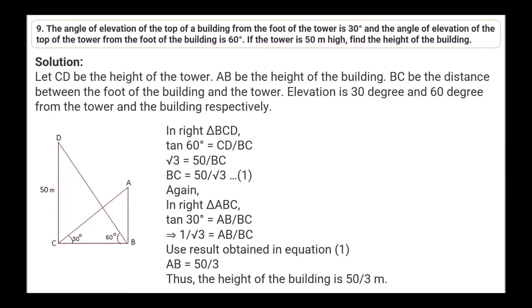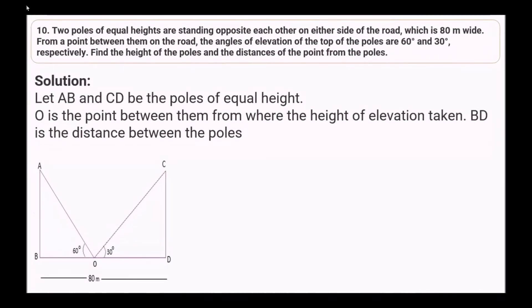Question 9: The angle of elevation of the top of a building from the foot of a tower is 30° and the angle of elevation of the top of the tower from the foot of the building is 60°. If the tower is 50 meters high, find the height of the building. In right triangle BCD: tan 60° = CD/BC, so √3 = 50/BC, giving BC = 50/√3. In right triangle ABC: tan 30° = AB/BC, so 1/√3 = AB/(50/√3), giving AB = 50/3 meters.